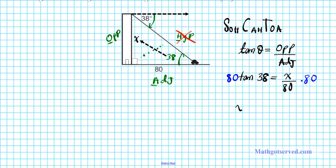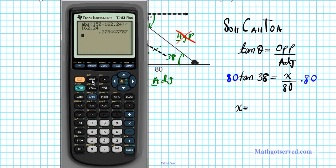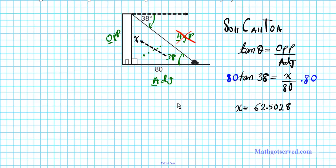To isolate x, we multiply both sides by 80. So x = 80·tan(38°). Let's calculate that — making sure the calculator is in degree mode. Entering 80·tan(38), we get 62.5028.